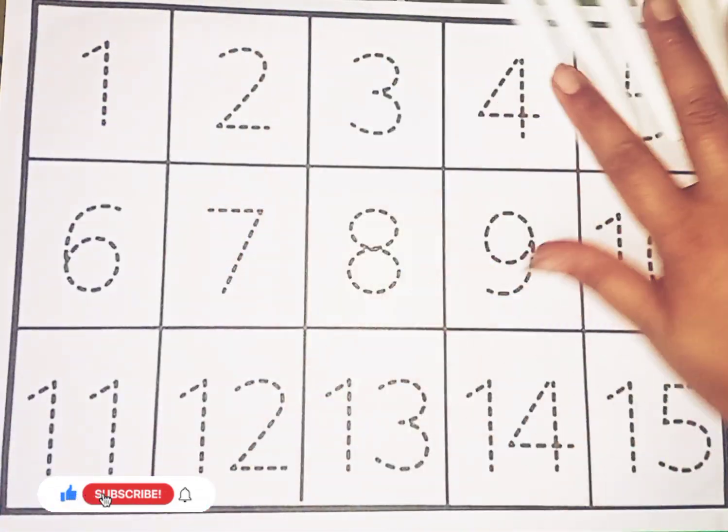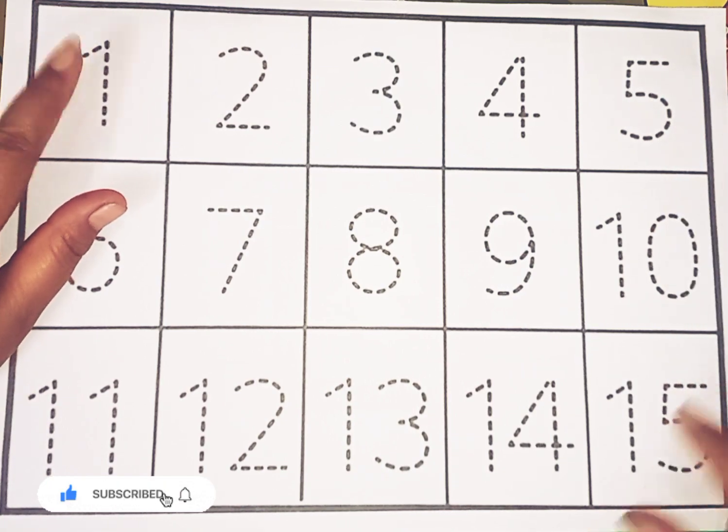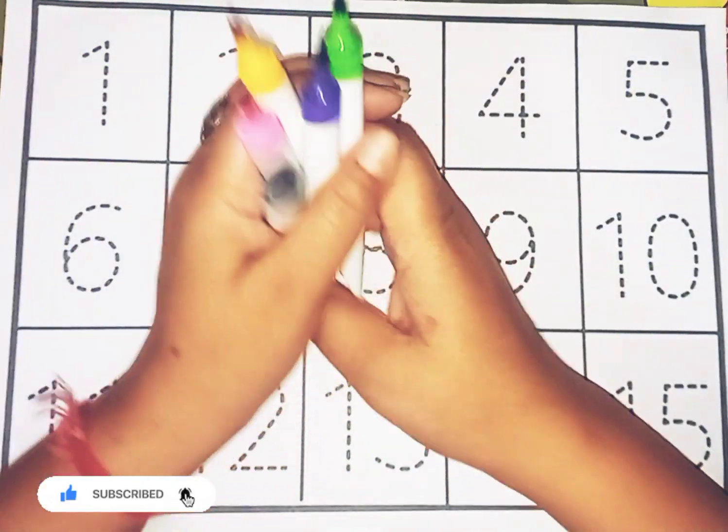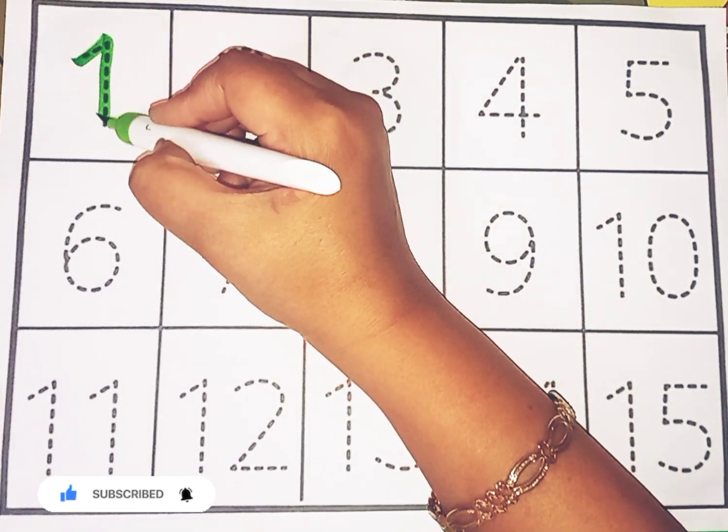So kids, today we learn counting 1 to 15. Start with all these colors, green color, number 1.